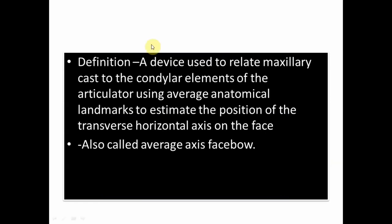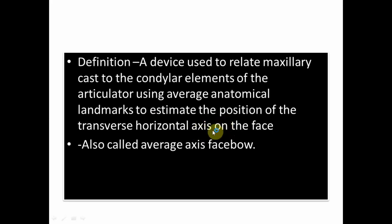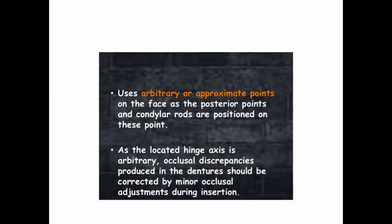The definition of arbitrary facebow: it is a device used to relate the maxillary cast to the condylar elements of the articulator using average anatomic landmarks. That is, the relationship of the maxilla to the anatomic reference points of the skull is transferred to the condylar elements of the articulator using average anatomic landmarks, to estimate the position of the transverse or horizontal hinge axis on the face. It is also called the average axis facebow.